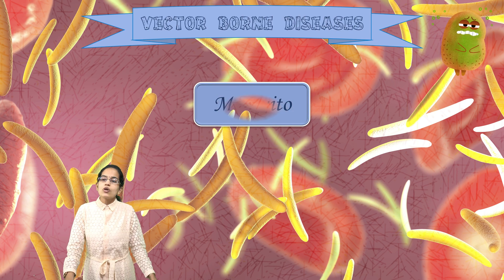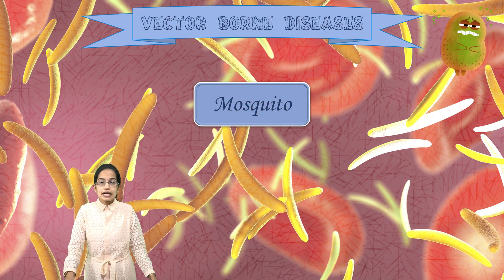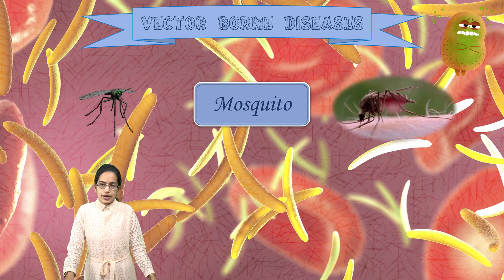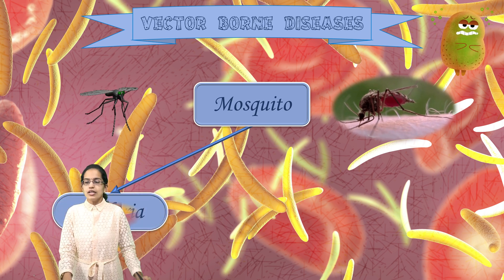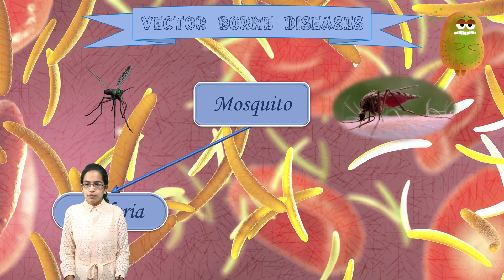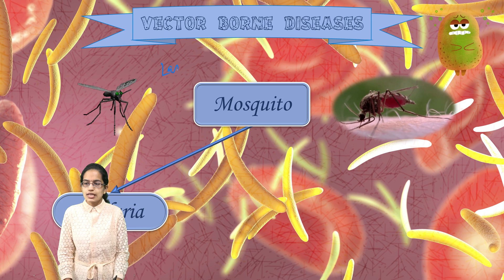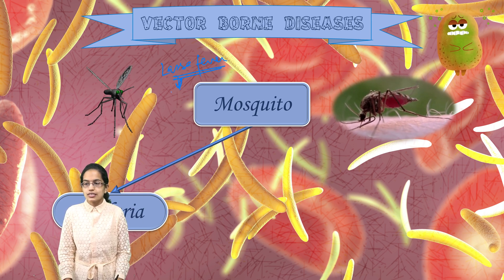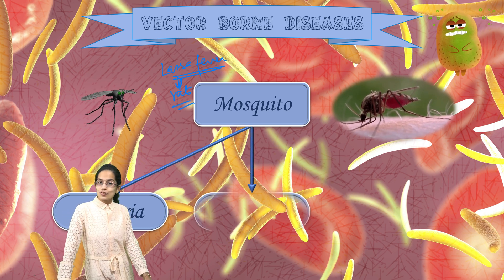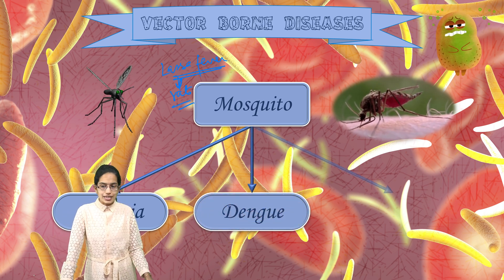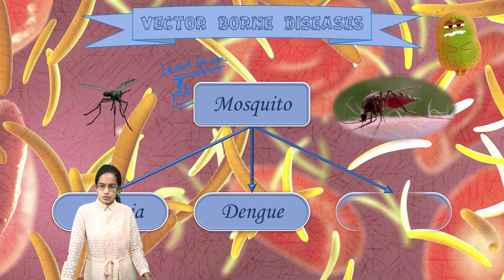We have commonly heard about mosquitoes causing malaria, dengue, and yellow fever — these are some of the common vector-borne diseases caused by mosquitoes. However, there is another important disease known as Lassa fever — it is caused by rats. Students commonly confuse it as caused by mosquitoes, but it is rats, so be very particular about that.